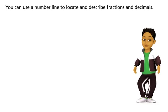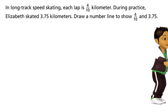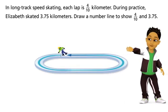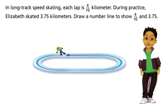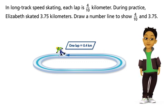You can use a number line to locate and describe fractions and decimals. In long track speed skating, each lap is 4 tenths kilometer. During practice, Elizabeth skated 3 and 75 one-hundredths kilometers. Draw a number line to show 4 tenths and 3 and 75 hundredths.